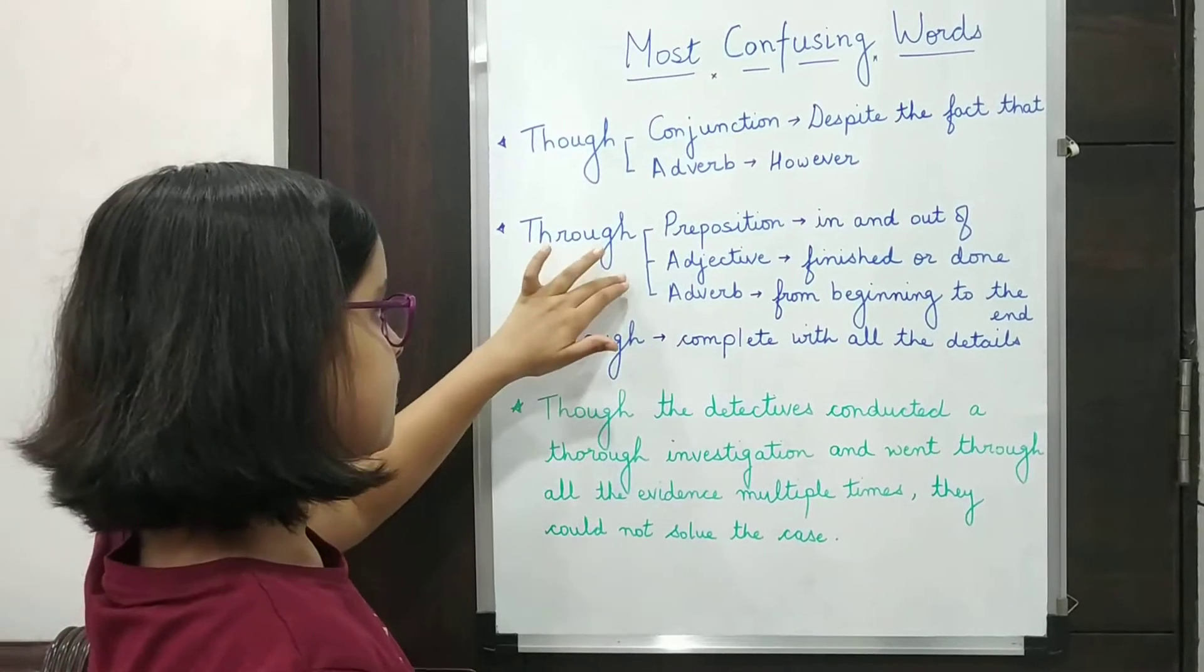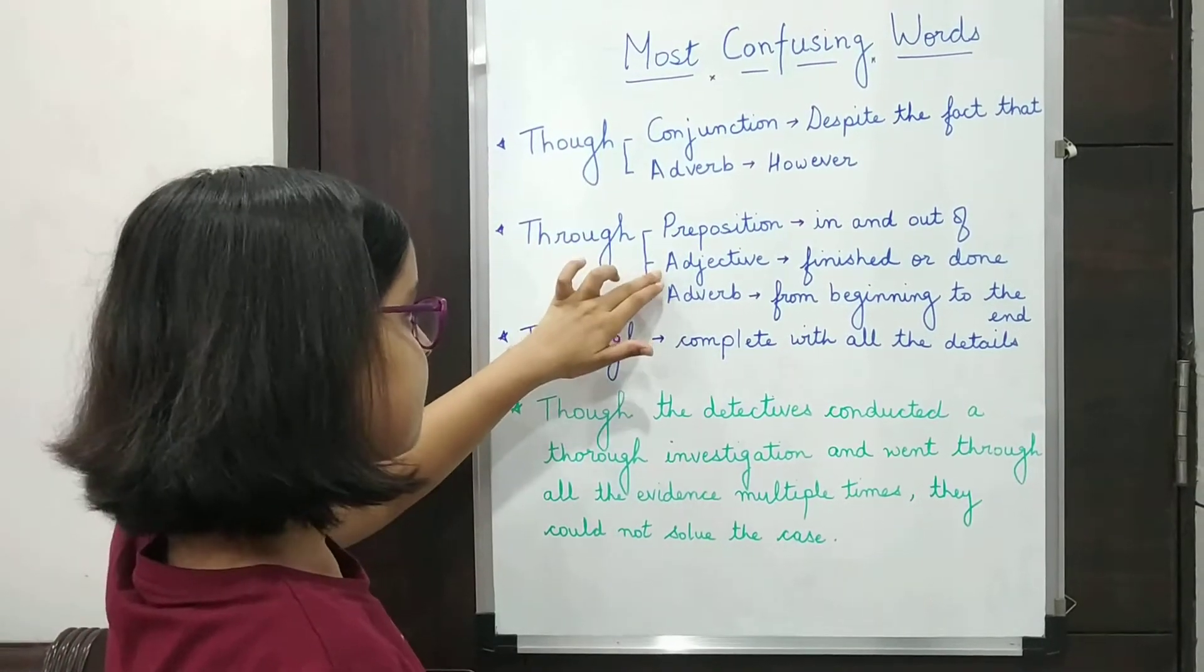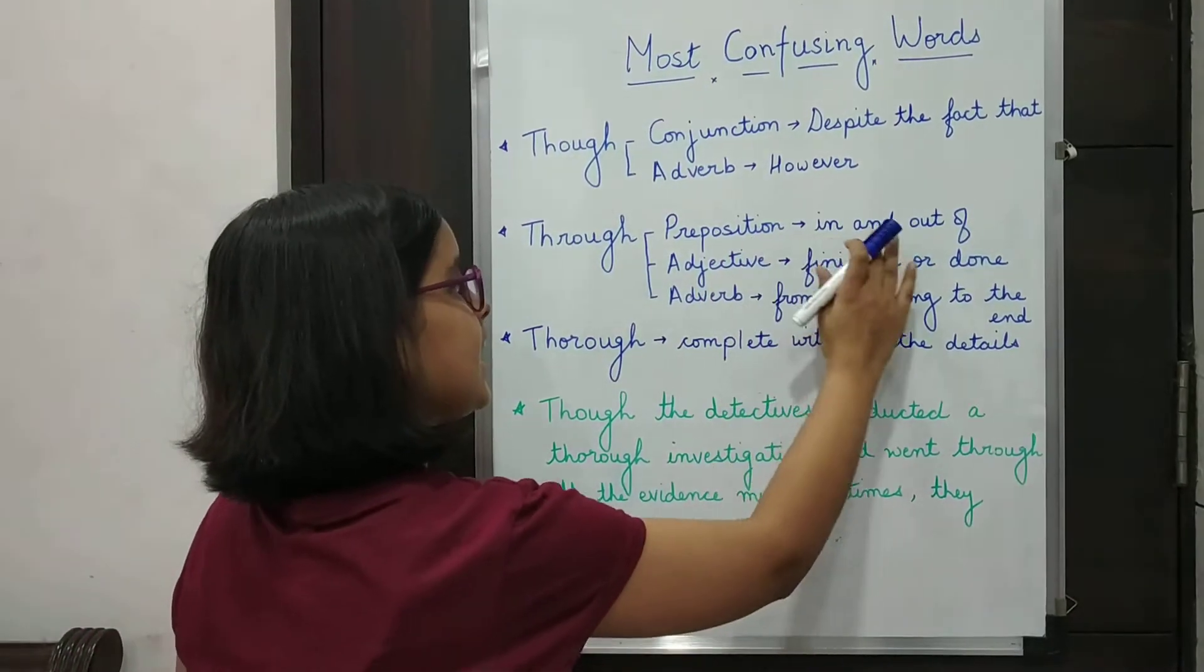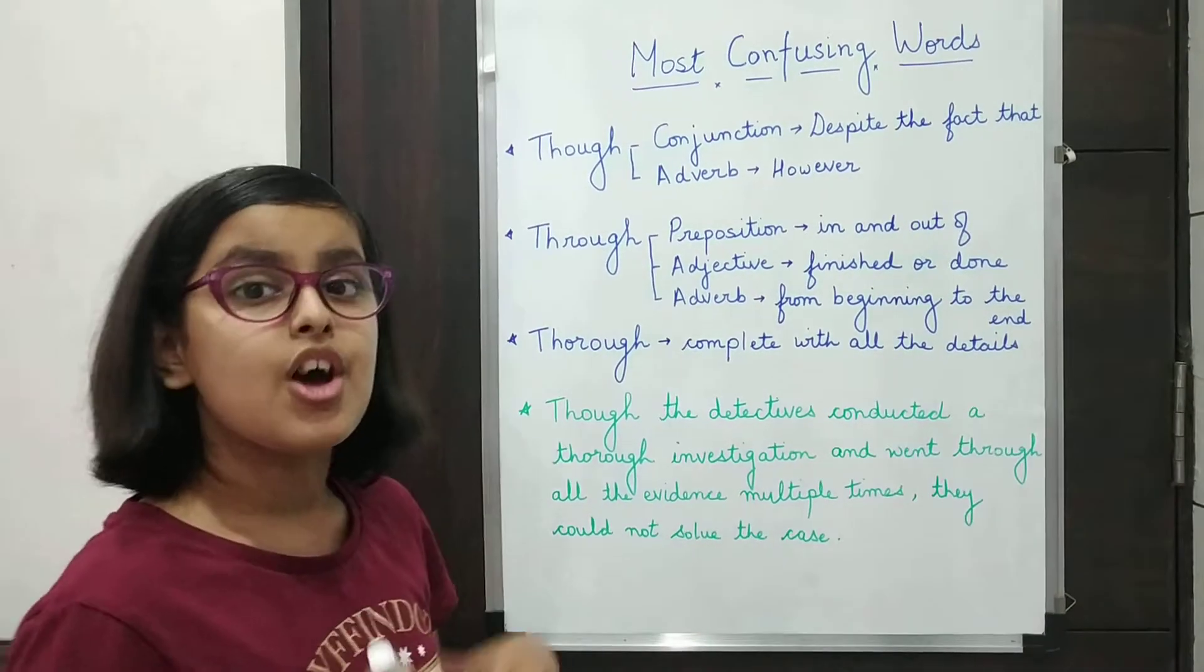Through can be used as a preposition, adjective, and adverb. As a preposition, it means in and out of. The cat jumped through the window.